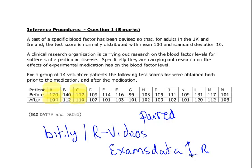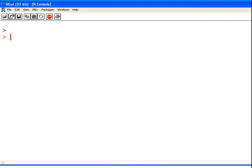So it's DAT79 and DAT81. So before is DAT79, let's try that again. Before is DAT79, I have it loaded up into R already.